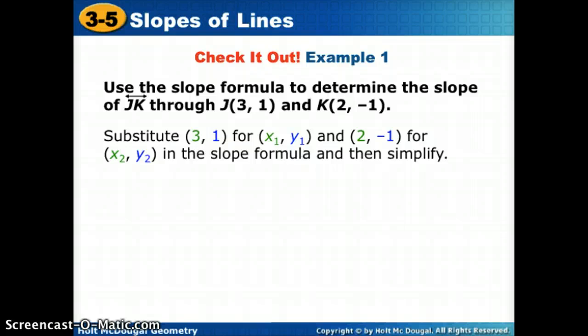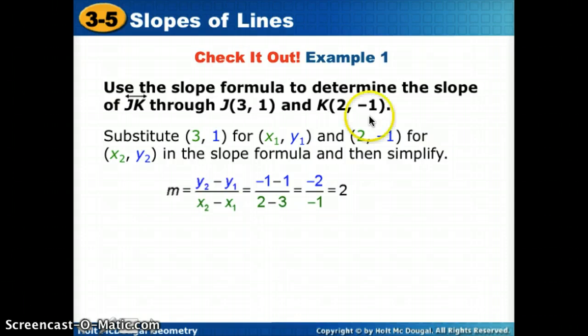So if we plug that in just like we did before, we're going to say the y of our second point minus the y of our first over the x of our second minus the x of our first. So that's what we got to be right here. Now if we simplify, negative 1 minus 1 gets bigger negatives, so we get a negative 2. 2 minus 3 is negative 1. Negative divided by negative gives us a positive 2.